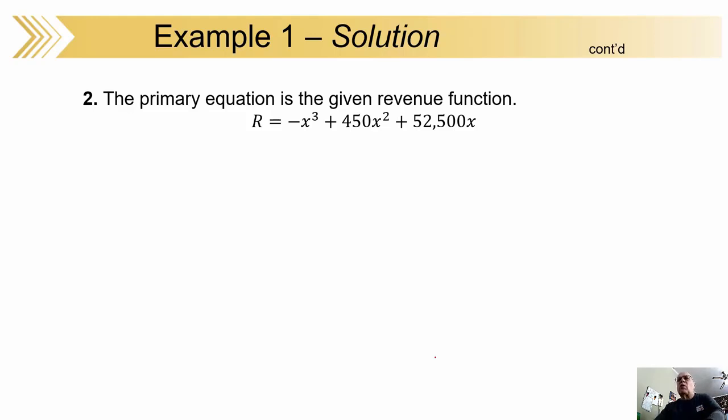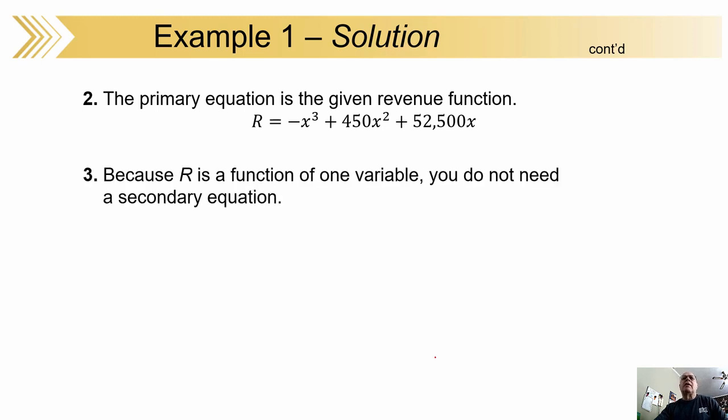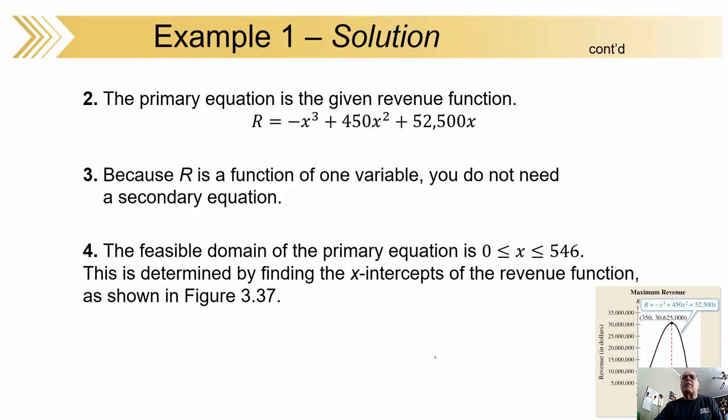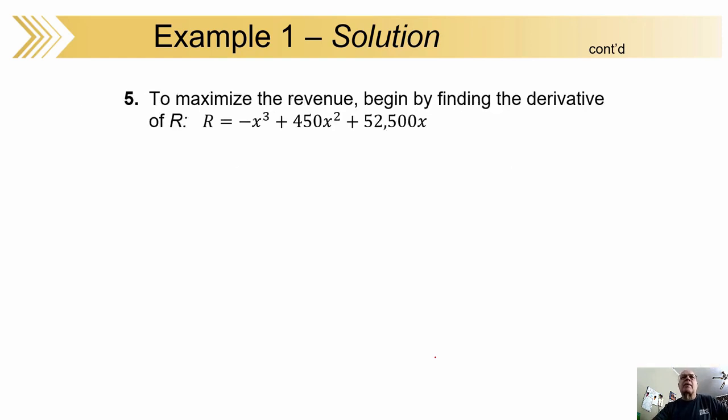That's where the derivative, of course, equals zero. Critical point. So we start off with the primary equation, the one that the guy in the business office gave us. Since there's only one variable, you don't need a secondary equation. In some of the other ones, we did need a secondary equation so we can get it down to one variable.